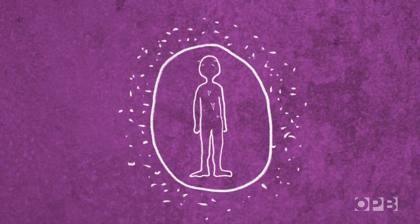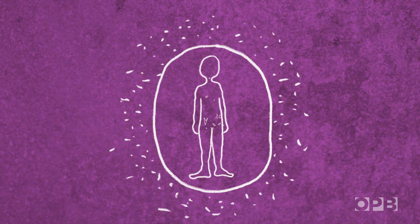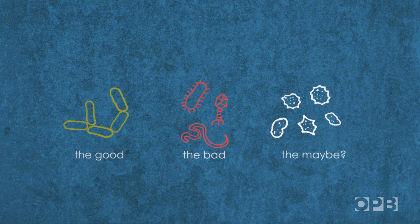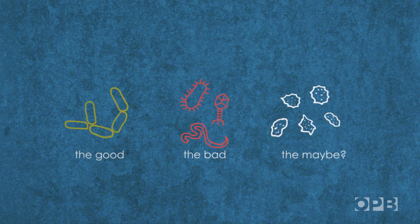Some scientists think that those changes have left our immune systems confused. The idea is that when we're young, our immune systems need to encounter lots of different microbes, both good and bad, to know what to attack and what to leave alone.